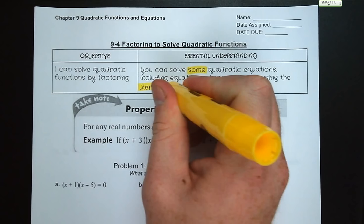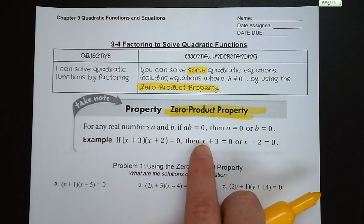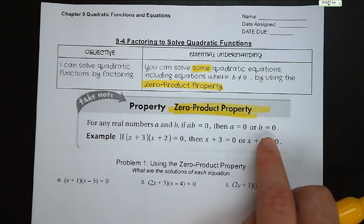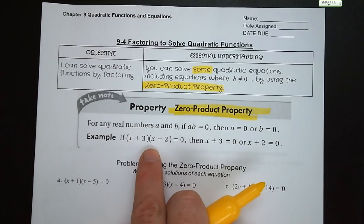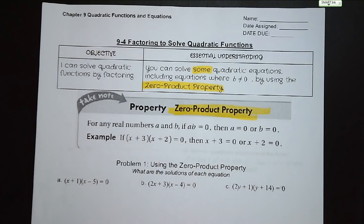What is the zero product property? Well, it simply says that if you have two real numbers, a and b, if a times b is equal to 0, then either a is equal to 0 or b is equal to 0. So in our application, if x plus 3 times the quantity x plus 2 is equal to 0, then either x plus 3 is 0 or x plus 2 is 0, because one of those two terms would have to be 0.